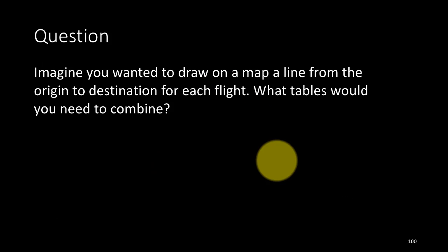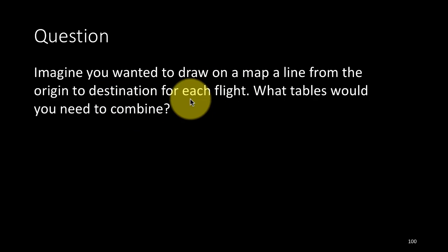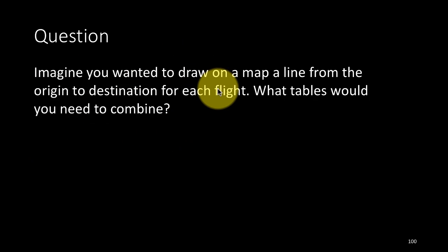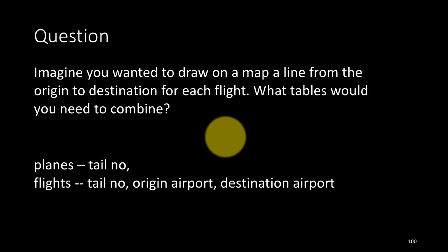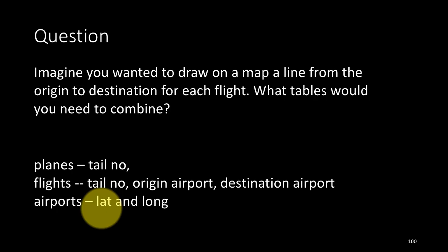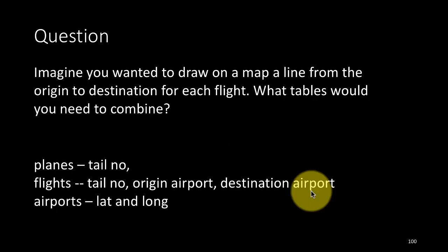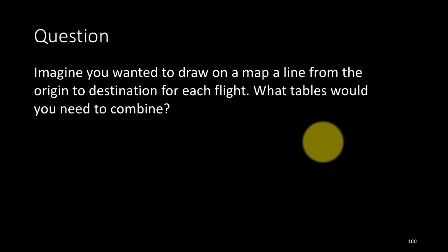Here are some practice questions. Imagine you want to draw on a map a line from the origin to the destination for each flight. What tables would you need to combine? Drawing an approximate line on a map requires latitude and longitude. That information is in the airports tibble. The flights tibble tells us the origin and destination airport codes, and the airports tibble gives us the latitude and longitude for each airport. We don't really need the tail number for this — just flights and airports.